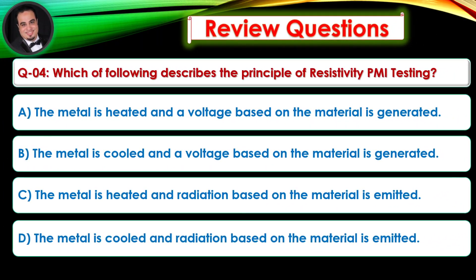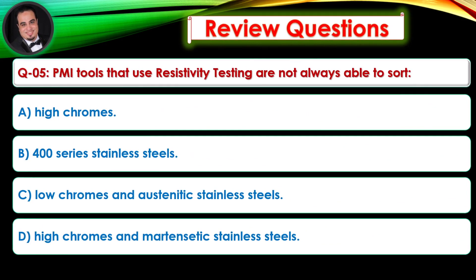Question number four asks which of the following describes the principle of resistivity PMI testing — Answer is A. Question number five asks which PMI tools that use resistivity testing are not always able to sort — Answer is C.